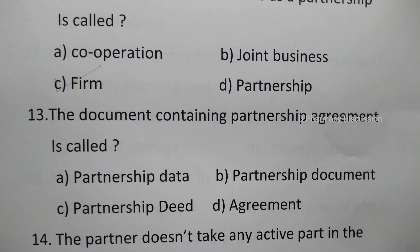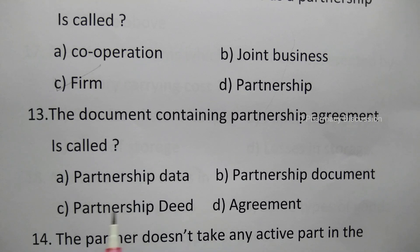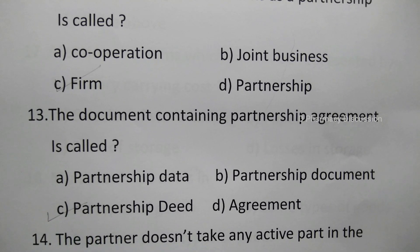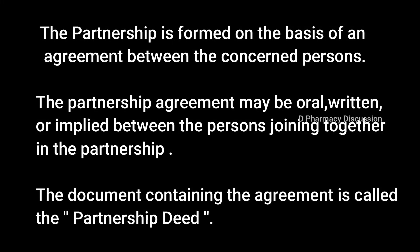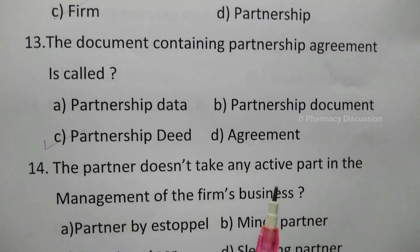Question 13: The document containing a partnership agreement is called — option A: partnership data, B: partnership document, C: partnership deed, D: agreement. The correct answer is option C, partnership deed. The partnership is formed on the basis of an agreement between the concerned persons, which may be oral, written, or implied. The document containing that agreement is called the partnership deed.